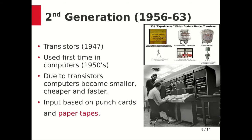The second generation of computers saw the evolution of transistors. Transistors were used in the second generation, replacing vacuum tubes. The first transistor was invented in 1947 but was not used in computers until 1950. Transistors made computers smaller, cheaper, and faster, and were more reliable than first generation computers.